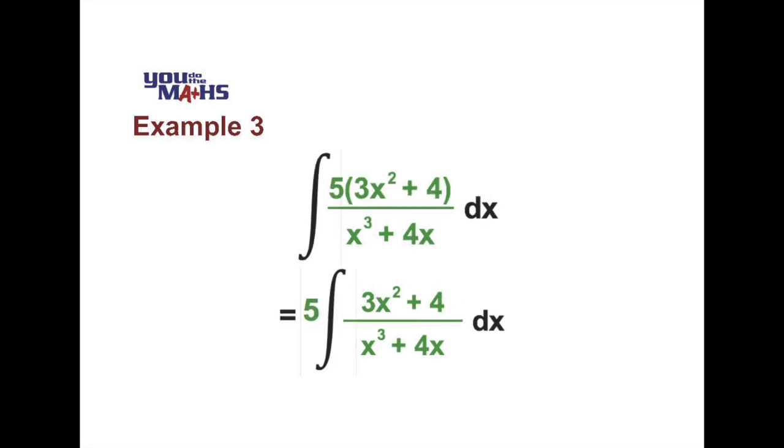And now we can see it does match the description we've given earlier for a possible solution being a logarithm. We can justify that in this case because if we look inside the integral, we know the derivative of the denominator, in other words the derivative of x cubed plus 4x, is 3x squared plus 4.